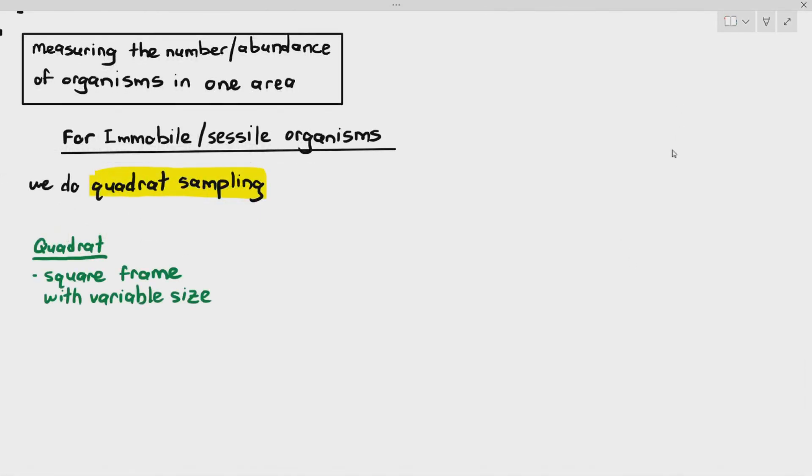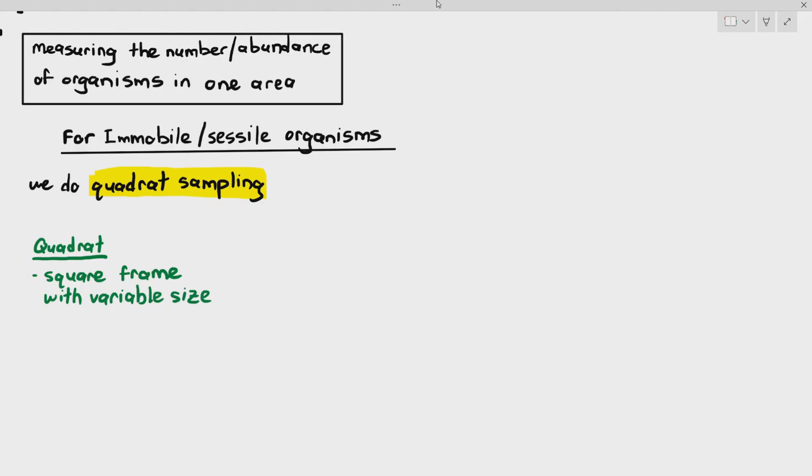So these organisms are always stuck within one area or they are stationary. So we can do something called a quadrat sampling. A quadrat is just a square frame with variable sizes. The most common quadrats that I've used is the one where the quadrat is one meter by one meter. So it's one meter square. And within the one meter square, we also have small grids, 10 by 10. Usually we will make it 10 by 10. The quadrat size has to be constant.